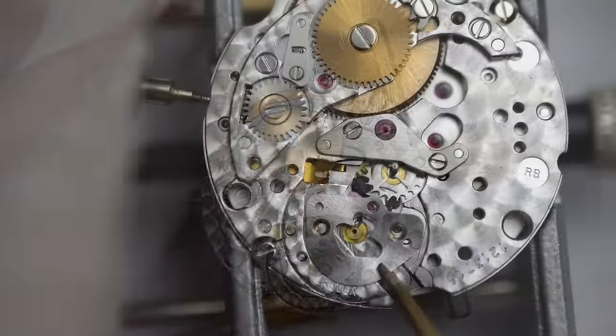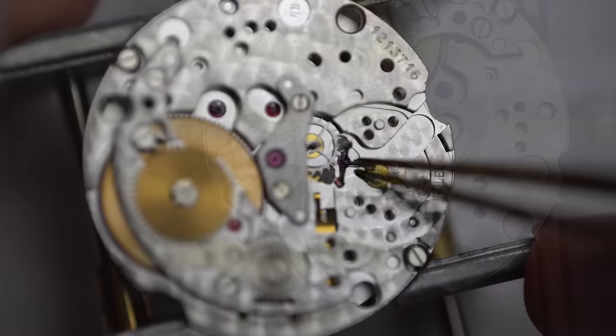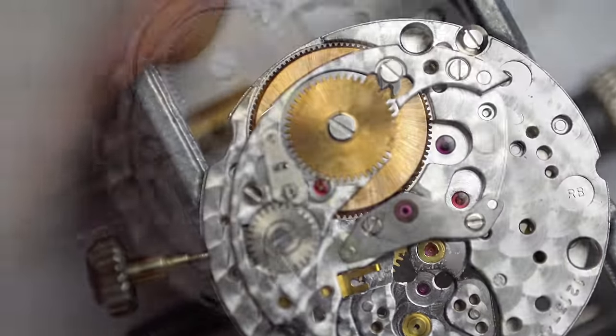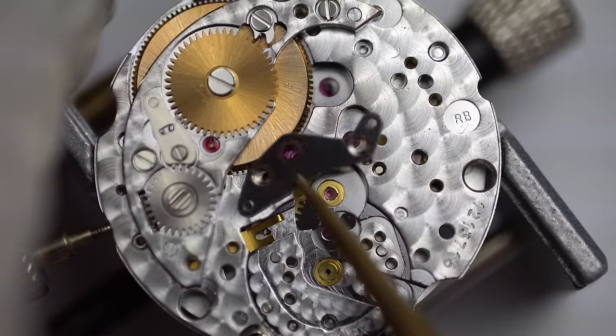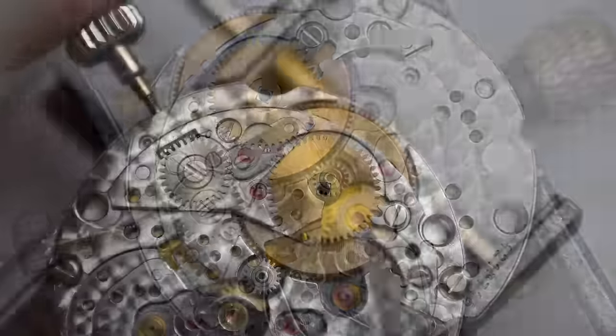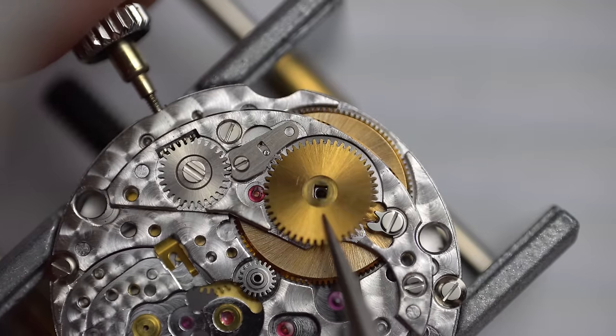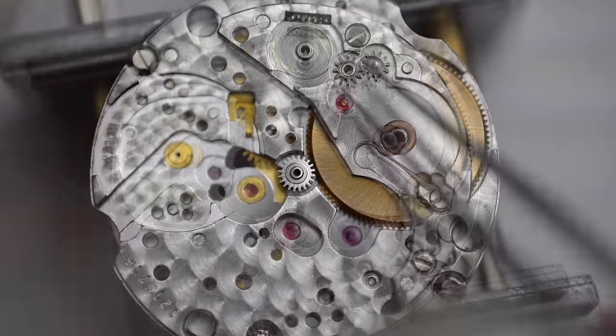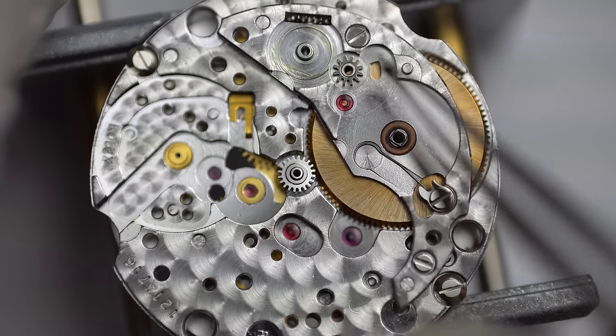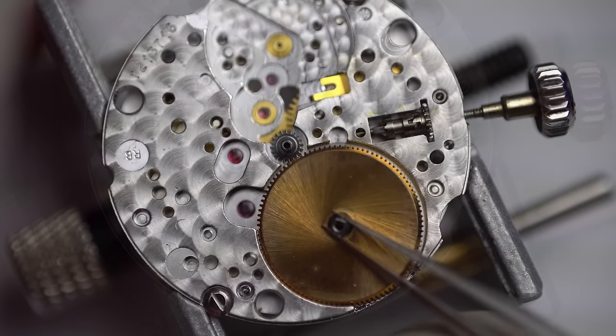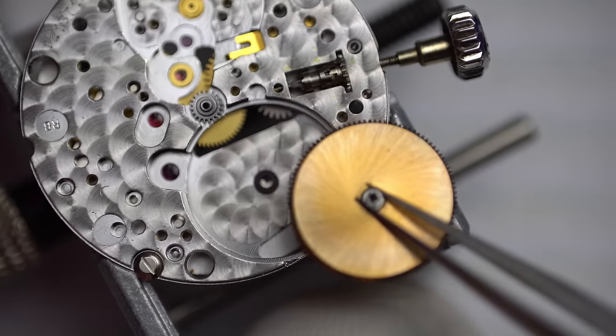So we're going to remove this balance bridge here. This is the first thing I always like to get out of the way. Move the train wheel bridge. And then we can remove all the train wheels themselves. So now that those are out, we can continue moving along. Remove the pallet fork as well as the escape wheel. Guys, these are very small and delicate parts. These are usually the first things that break. So put them someplace safe.